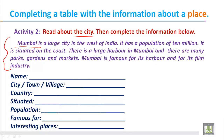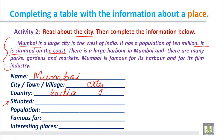Now we complete the information. The name of the city is Mumbai. It is a city, not a village or town, so we write 'city.' The country is India. For 'situated,' we find in the paragraph that it is situated on the coast, so we write 'situated on the coast.' For population, it has a population of 10 million.